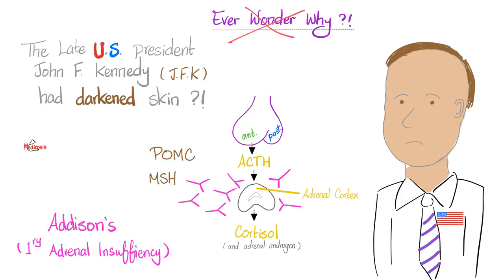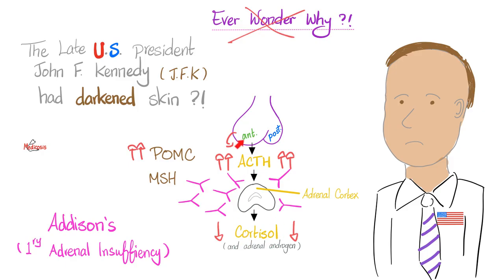Now you know why JFK had darkened skin: because JFK had Addison disease. Addison disease is usually an autoimmune disease where nasty autoantibodies destroy your own body — in this case, destroying the adrenal cortex. The adrenal cortex can no longer secrete cortisol, so cortisol goes down. As a negative feedback response, the anterior pituitary tries to shout louder, secreting more POMC to increase ACTH, trying to tell the adrenal cortex to make more cortisol. But every time the anterior pituitary secretes more ACTH, it cannot help itself — it also secretes lots of MSH, and that's why JFK had hyperpigmentation. Rest in peace, Johnny.